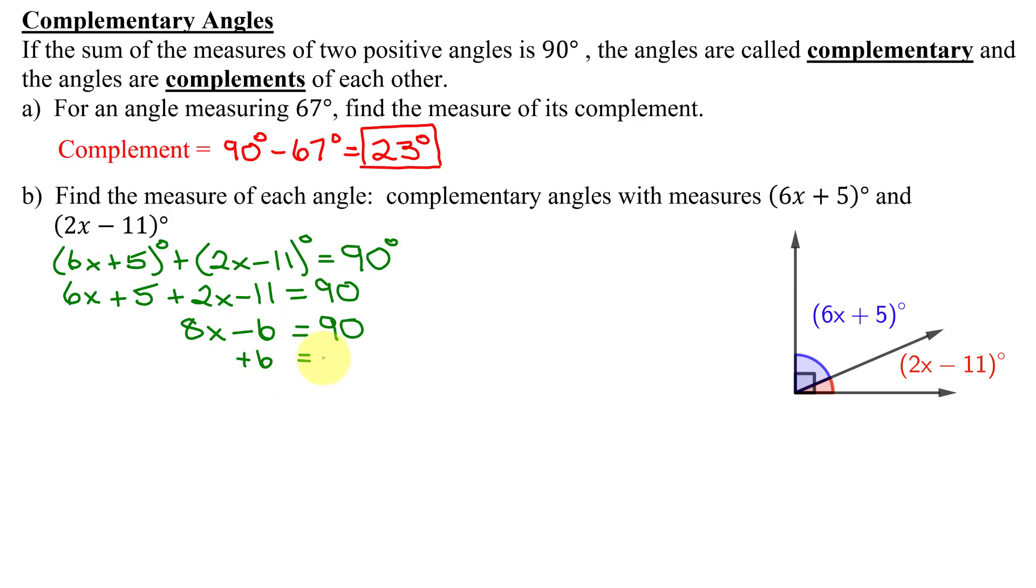add 6 to both sides and I get 8x equals 90 plus 6 is 96. Last step, divide both sides by 8. These 8s reduce. I get x equals 96 divided by 8 is 12.